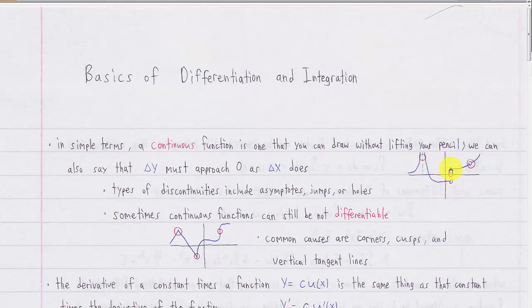A more precise definition of continuity is: a function is continuous at a point if the function is defined at that point, and the value of the function at that point must equal the limit at that point. Here, the function is defined at this x value, but the limit does not exist because the limits from the left side and the right side are different. At these other points, the function is not defined at these x values, even though in one case the limit exists and in another it does not. These three types of discontinuities are called an asymptote, a jump, and a hole.